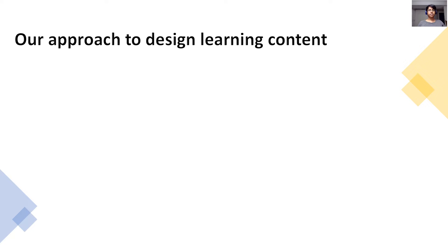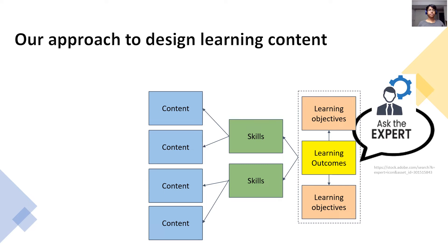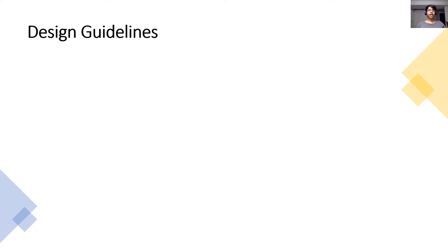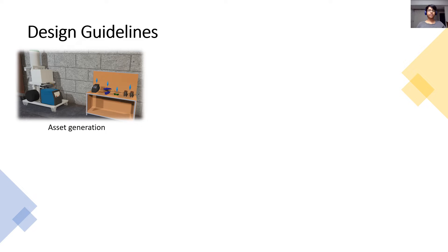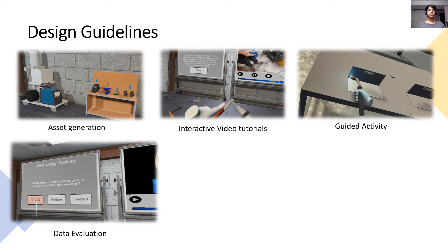We adopted the backward design model to design the learning content for VR Weld Learner. As a first step, we worked with welding training experts to first identify the learning outcomes and then backward design the learning objectives and evaluation strategies for assessing learner skills. Next, the instruction was designed in the form of self-directed learning modules with guided activities, practice sessions and assessments to enable learners to gain proficiency in an organized manner. A set of design guidelines were developed to act as building blocks for developing the learning activities. Careful consideration has been taken to evaluate the user's performance and provide feedback at necessary steps before moving on to the next sessions.